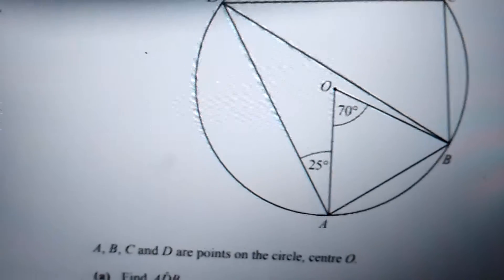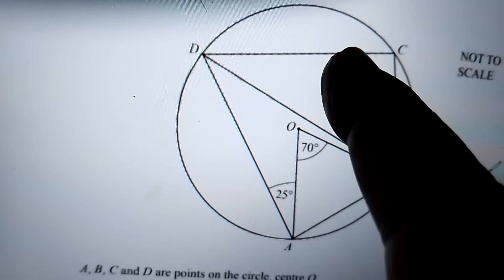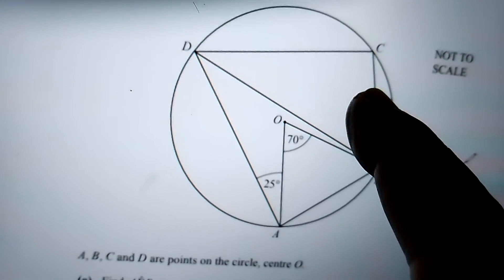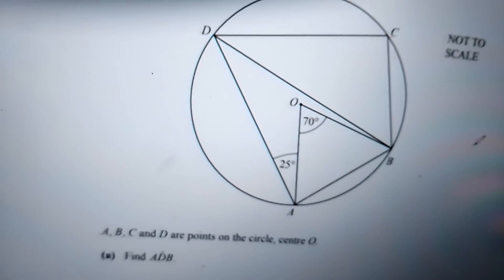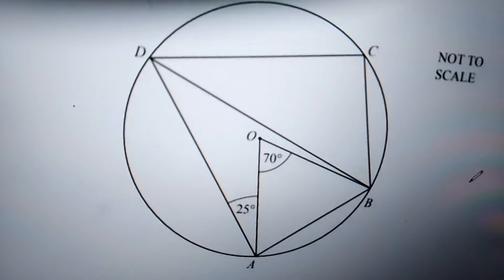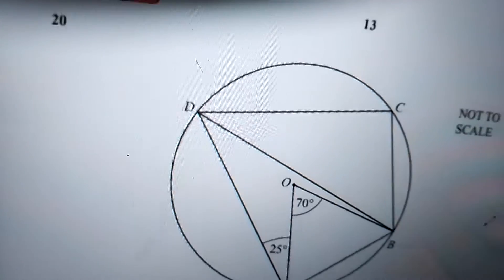So if this entire angle is 80, the opposite angle over here will be 100 degrees, because the opposite angles in a cyclic quadrilateral sum up to 180. So BCD is this angle, that will be 100 degrees, because this angle over here is 80 degrees.